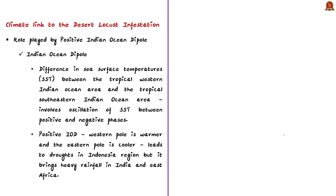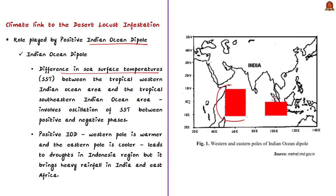The author describes the Indian Ocean Dipole (IOD), which refers to the difference in sea surface temperatures between two areas: the tropical western Indian Ocean and the tropical southeastern Indian Ocean. The Indian Ocean Dipole mode involves oscillation of sea surface temperatures between positive and negative phases. The positive phase means cooling of waters in the eastern Indian Ocean — the western pole is warmer and the eastern pole is cooler — leading to droughts in the Indonesia region but heavy rainfall in India and East Africa.